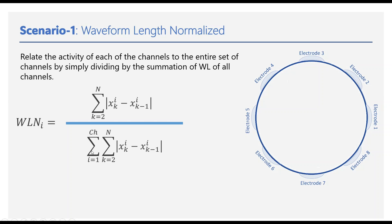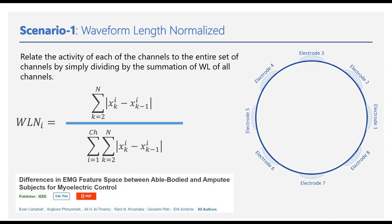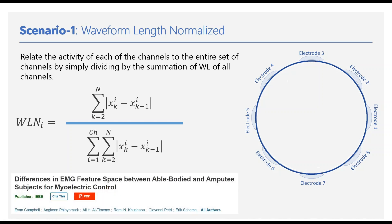To understand more about how this performs across amputees and intact limb subjects, you might refer to the paper titled 'Differences in EMG Feature Space Between Able-Bodied and Amputee Subjects for Myoelectric Control,' which studied performance differences when testing features on amputees versus intact limb subjects, and discusses how performance changes due to morphology changes after amputation.